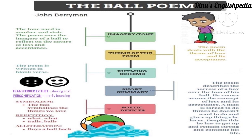If we talk about the poem's mood and tone, the poem's tone is somber — somber means serious. Stoic means very stiff, not funny, very serious — it's written as a serious poem. The poem uses the image of a ball to reflect on the nature of loss and acceptance. It conveys that we have to accept the losses in our life, and this has been conveyed through the image of a boy.